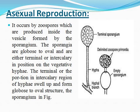In asexual reproduction, a terminal part of the hyphae produces an outgrowth — a terminal sporangium — which is a globose or oval structure. The sporangium contains many contents. In its development, the lower part of the sporangium becomes empty as all the material is transferred to the terminal structure.